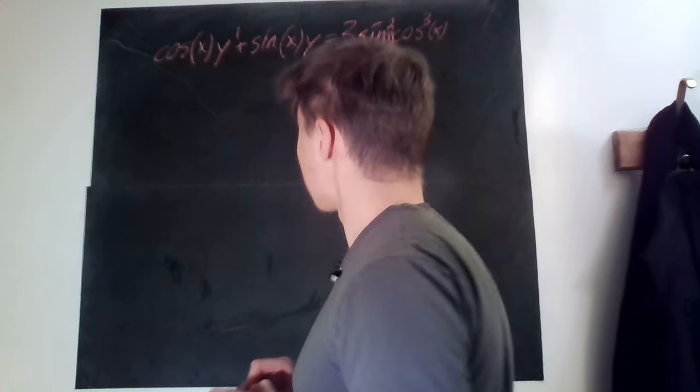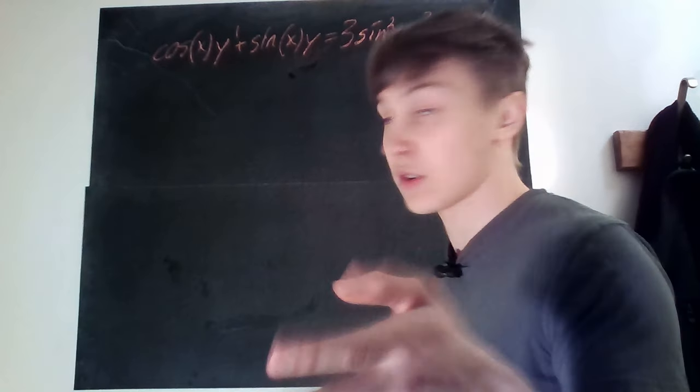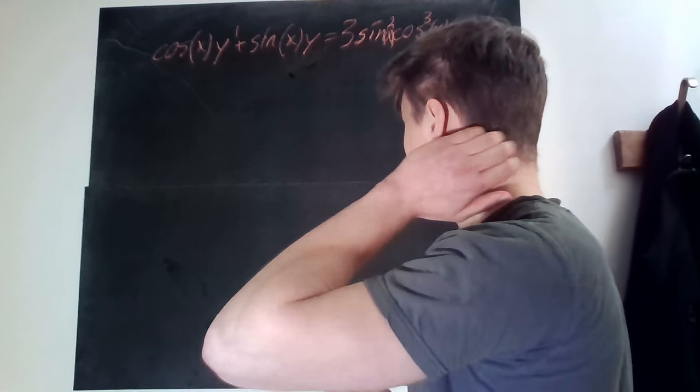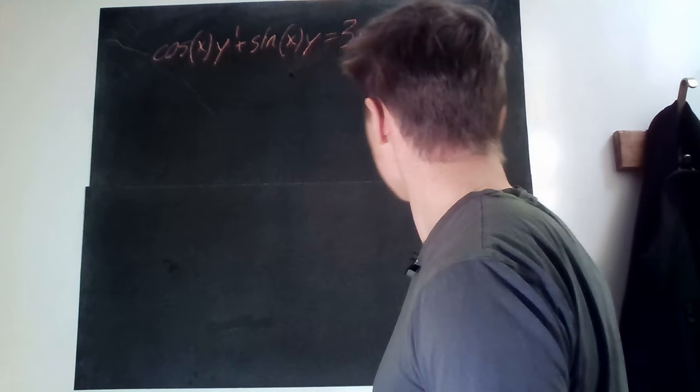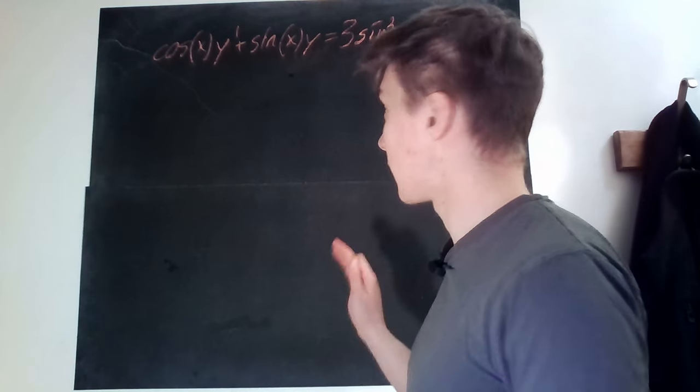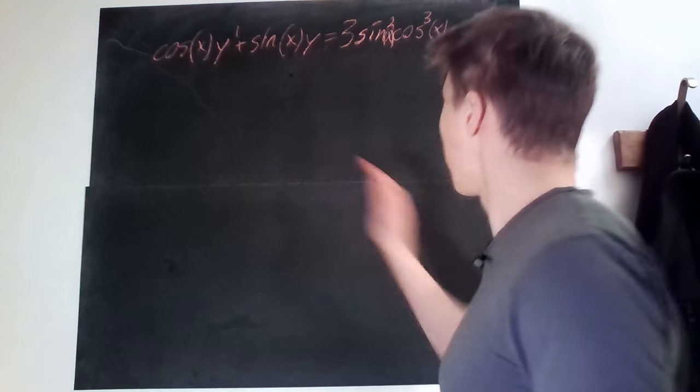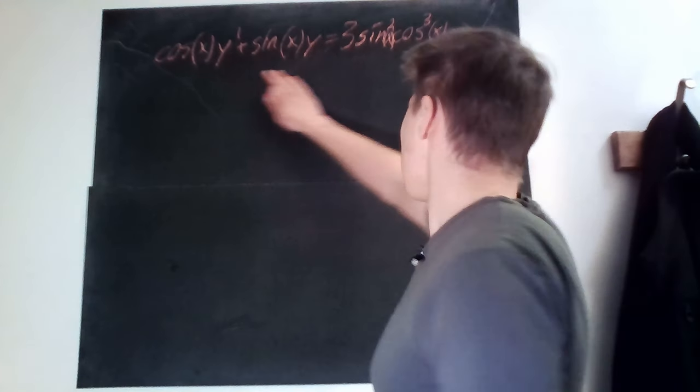For this you just, since x is strictly less than pi over 2, we know that without any problems we can divide by cosine and then just move everything that's not y prime to the right hand side.